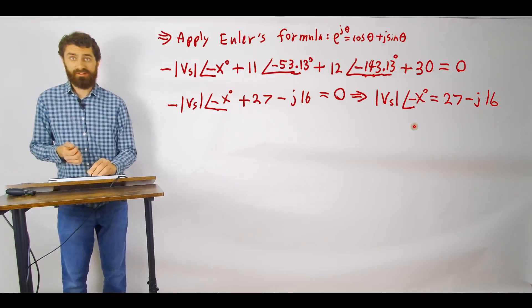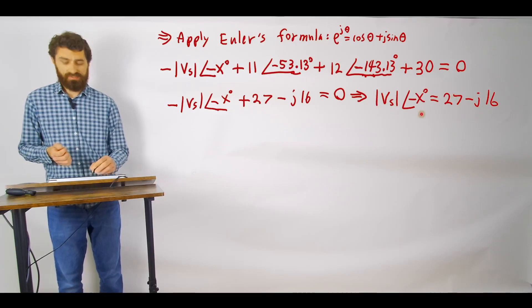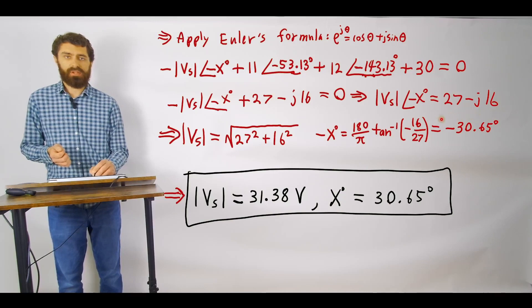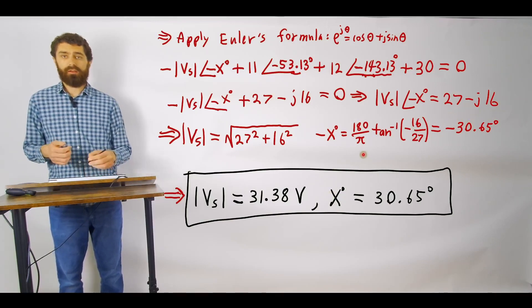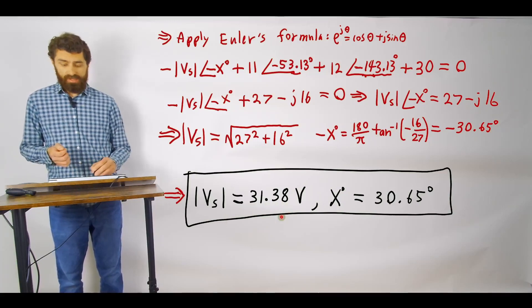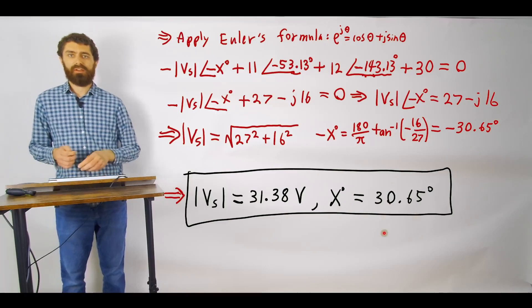So this actually if we want to find the magnitude of the voltage here we simply have to take the magnitude of this complex number here and to find the phase we simply take the inverse tangent. Here I have a factor of 180 over pi here in order to convert it into degrees here. So that means here that our voltage is 31.38 volts and our value for x in degrees is basically the opposite of this because we have a negative sign here so it's positive 30.65 degrees